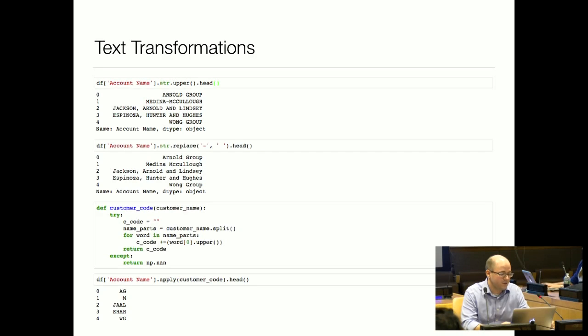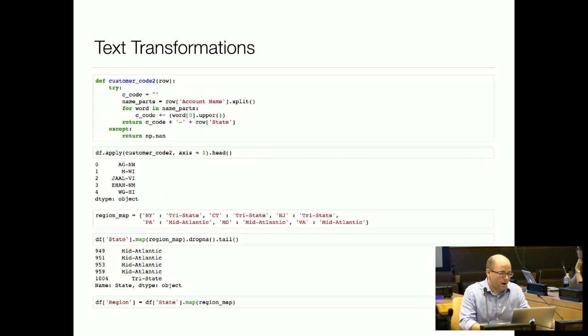A lot of times we want to define our own function that does something a little different. With that, we can use the apply method on a Series and apply the function to all those values. I created this very simple function called customer_code that basically breaks a string into words, takes the first letter of each word, capitalizes it, and sticks them back together. You can see we've created customer code 'AG', which corresponds to 'Arnold Group'.